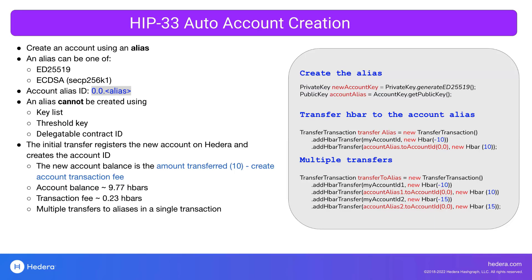This is super helpful and super clear. Just to confirm — the person paying the fees to create the new account would be that new account? The person paying for the fees is the person that is transferring hbar into that alias account. Someone else can create the alias, and if I ask you to transfer 10 hbars to that alias, the transaction fee for creating that account will come out of the 10 that you're transferring to that alias. Perfect, it does make sense.